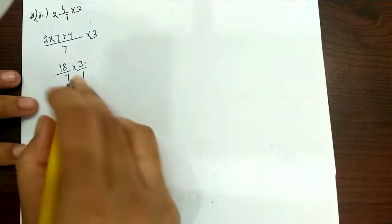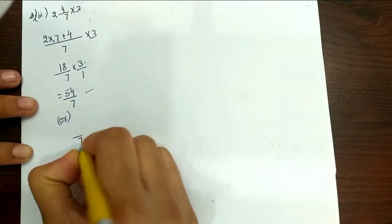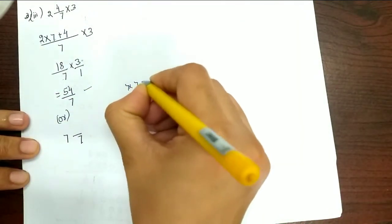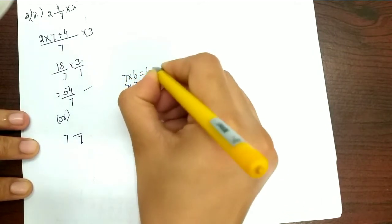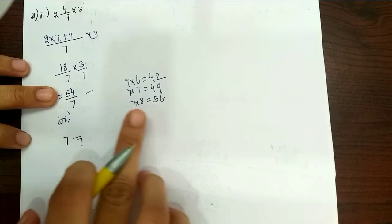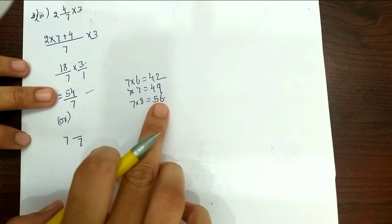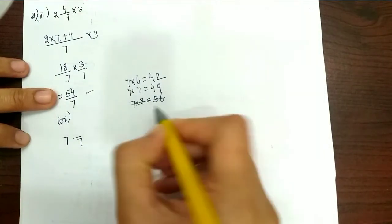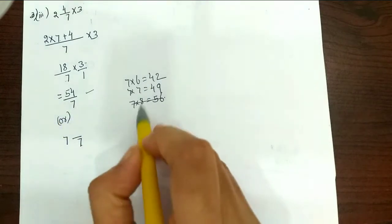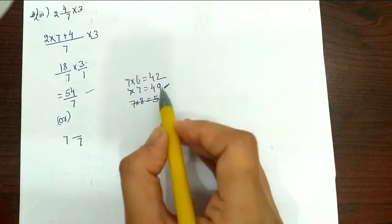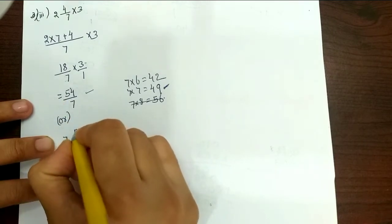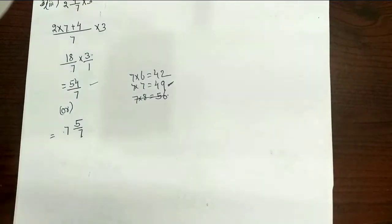So we need to find in the 7 times table the nearby number to 54. 7 times 7 is 49, 7 times 6 is 42, 7 times 8 is 56. Here 54 is between 49 and 56. I choose the smallest nearby number, which is 49 — that is 7 times 7. So 54 minus 49 is 5. Therefore the answer is 7 and 5/7.